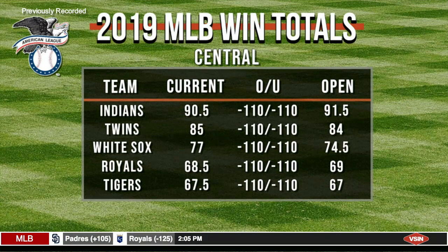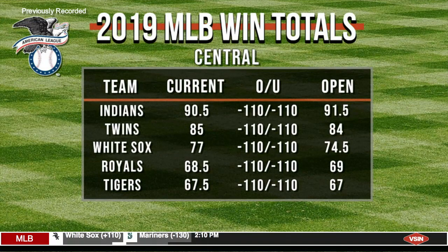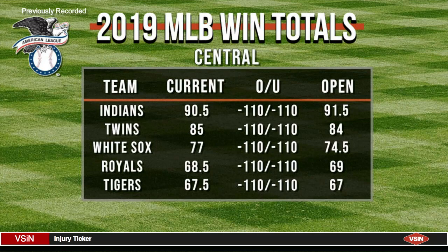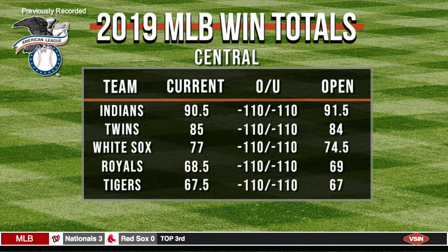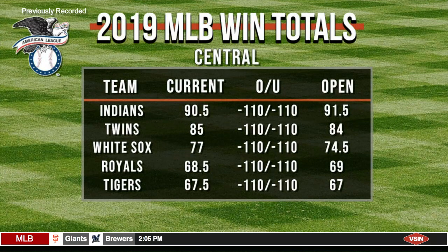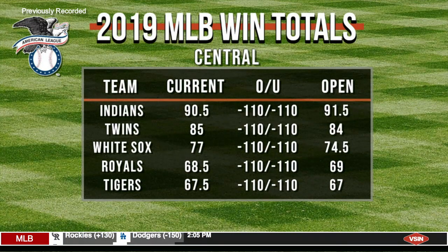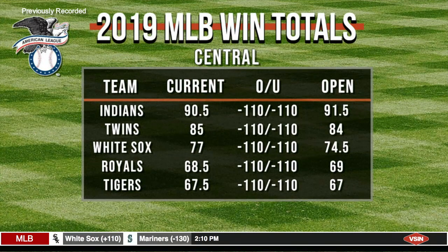The win total is simple — here's the number, is this team going over or under? It's also important to think about whether the team will be buying or selling at the deadline. Here are the five teams in the American League Central: Indians 90 and a half, Minnesota Twins 85, White Sox opened 74 and a half and have been bumped up to 77, Royals 68 and a half, and Tigers 67 and a half. If the Indians' number seems a little high, I think this division is wide open — I'd be going under the higher numbers and over the lower.